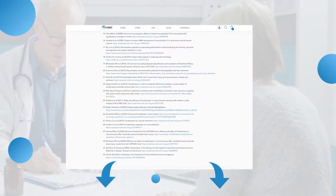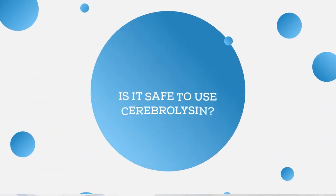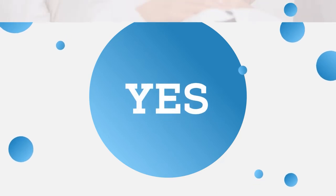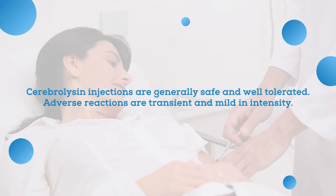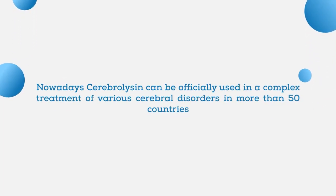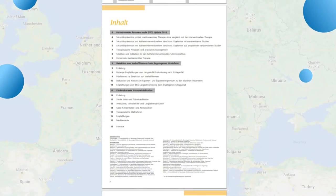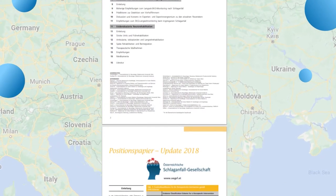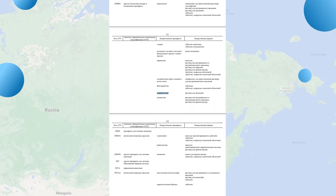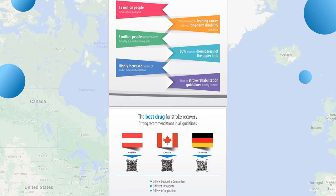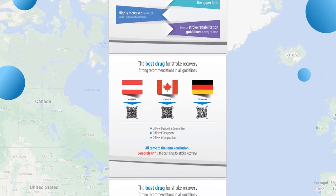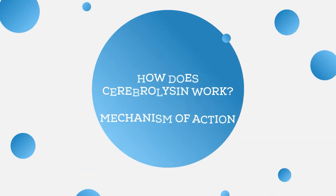Cerebrolysin injections are generally safe and well tolerated. Commonly reported adverse reactions are transient and mild in intensity. Cerebrolysin can be officially used as a treatment for various cerebral disorders in more than 50 countries, mostly in Europe and Asia. In Austria, it's included in the neuro-rehabilitation after-stroke guidelines. In Russia, it has been used since the early 1970s and is on the list of vital and essential drugs. Cerebrolysin is also approved in Canada in the stroke treatment guidelines.